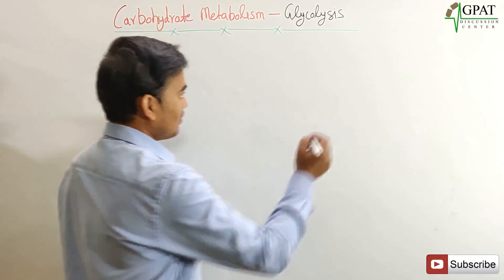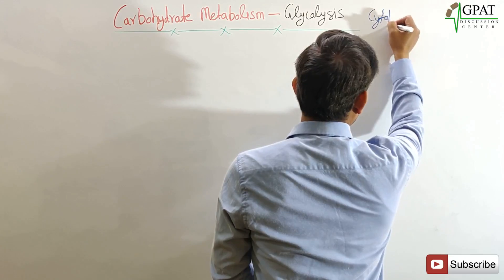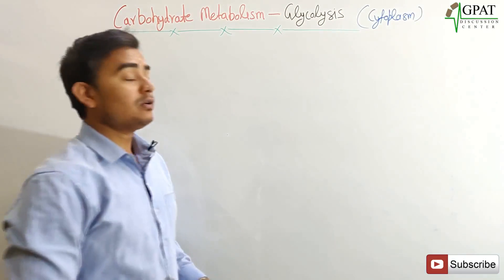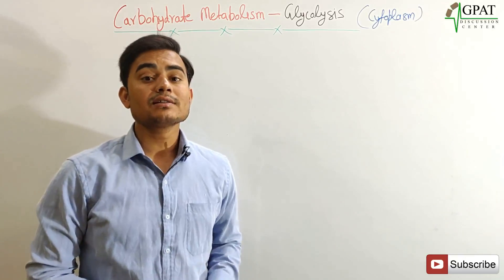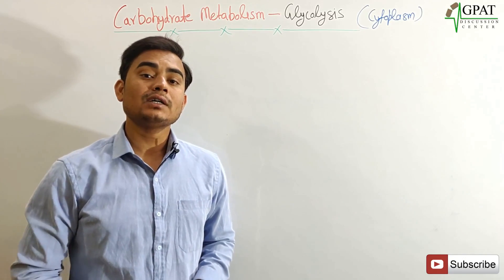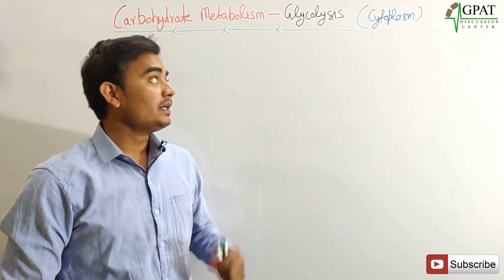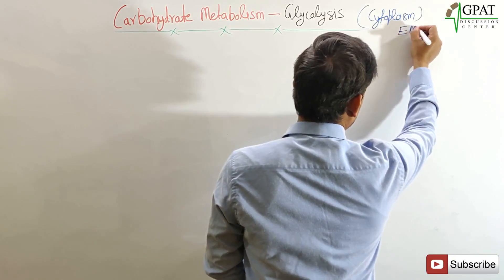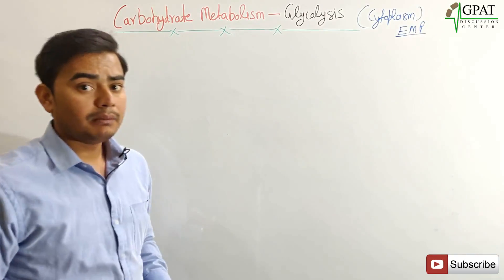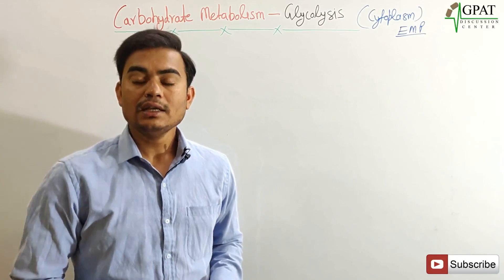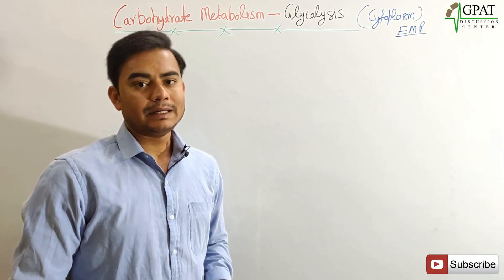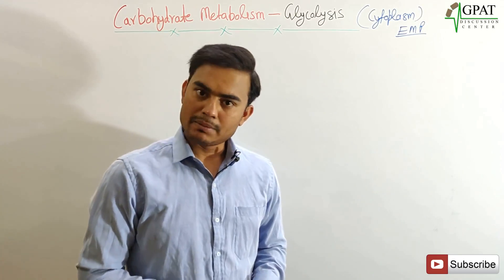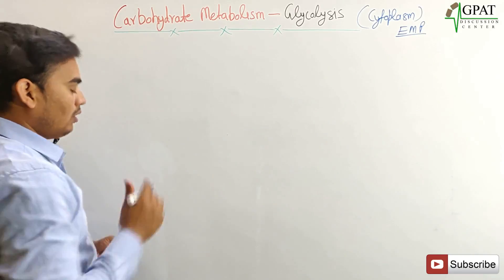Glycolysis occurs in the cytoplasm of the cell. All enzymes of glycolysis are located in the cytoplasm. Glycolysis is also known as the EMP pathway — the Embden-Meyerhof pathway — named after the scientists Embden and Meyerhof who first discovered the steps of glycolysis.